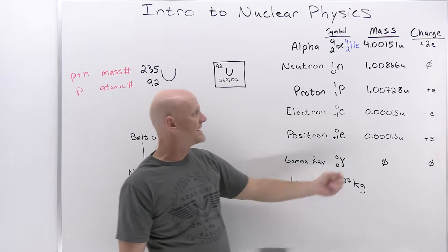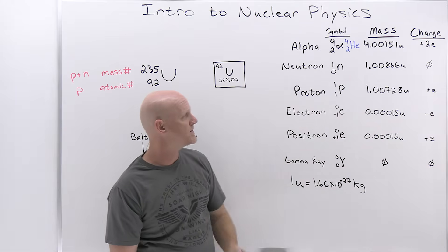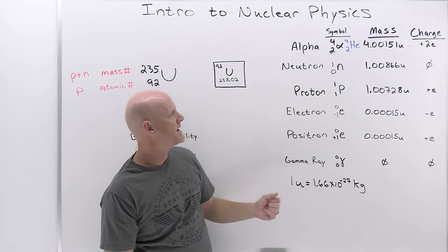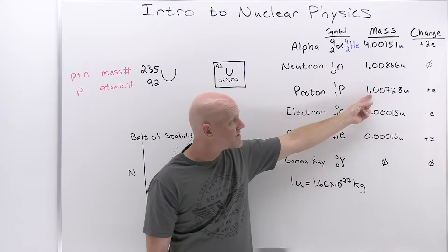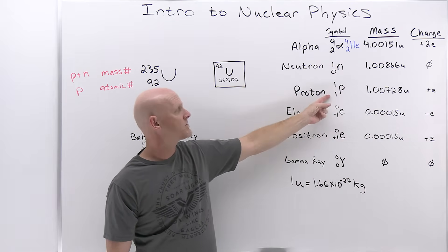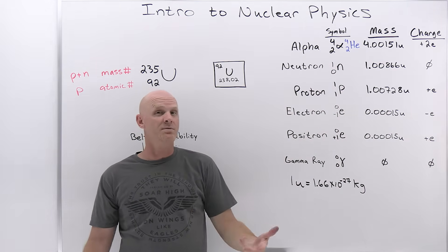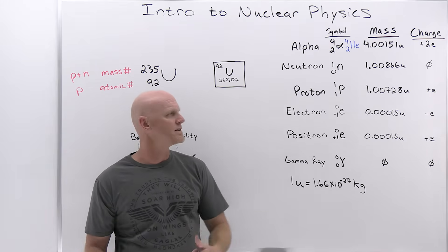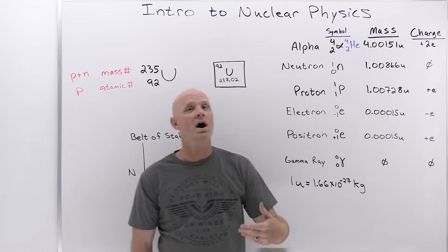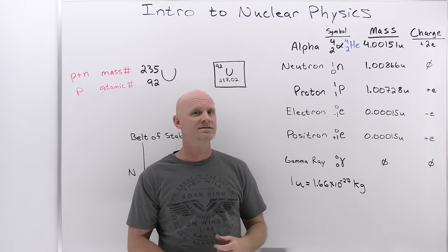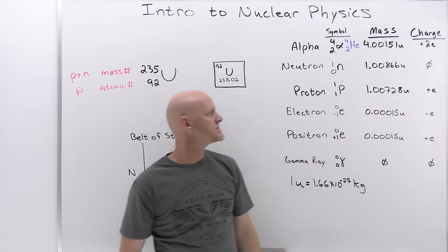Moving on to the proton, which is just slightly lighter than the neutron at 1.00728 unified mass units. The mass number is 1, and the atomic number is also 1. It has a plus one charge and one proton, because it is the proton. Its charge is positive 1.6×10⁻¹⁹ Coulombs — the positive fundamental unit of charge.